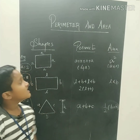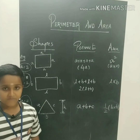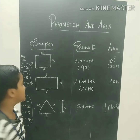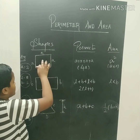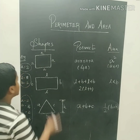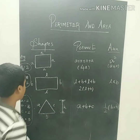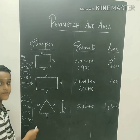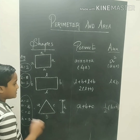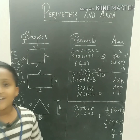Now, this is the area. For a square, the area is A into A, which is A squared. For a rectangle, the area is L into B. For a triangle, where two sides are the base and height, the area is one-half into B into H.